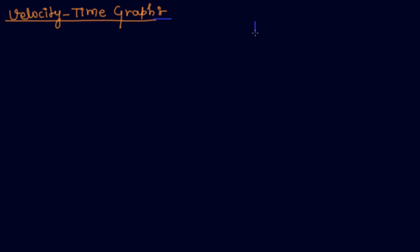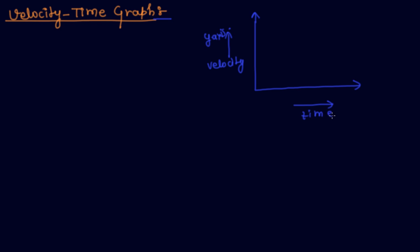Hi friends, today I discuss velocity-time graph. The variation in velocity with respect to time for an object moving in a straight line can be represented by a velocity-time graph, in which velocity is represented along the y-axis and time is represented along the x-axis.